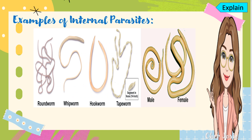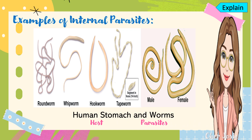Here are the examples of internal parasites that can be found in the human stomach. The examples of parasites here are the different types of worms: roundworm, whipworm, hookworm, and tapeworm. The host here is the human stomach and the worms are the parasites.